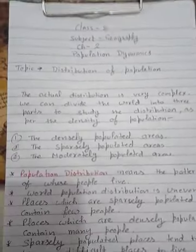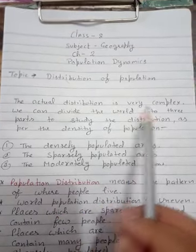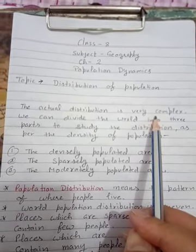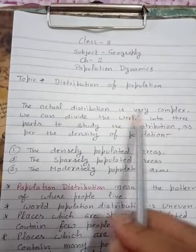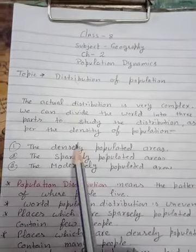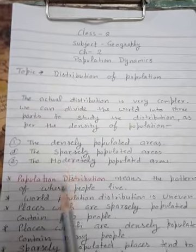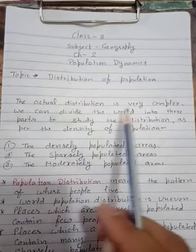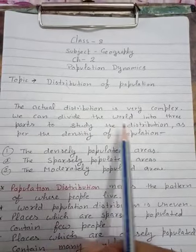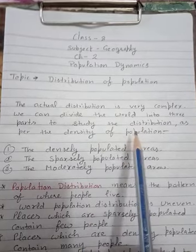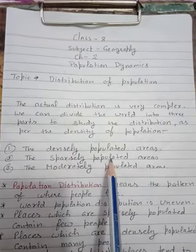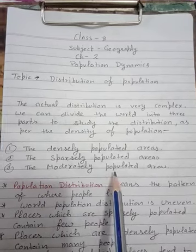The actual distribution is very complex. You already know from the last lecture that on Earth's surface, the distribution of population is uneven across the whole world. Some places are densely populated, some are very sparsely populated, and some are moderately populated. We can divide the world into three parts to study the distribution as per the density of population: first, the densely populated area; second, the sparsely populated area; and third, the moderately populated area.